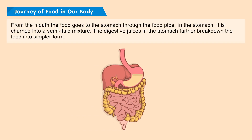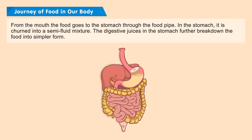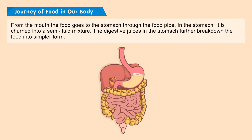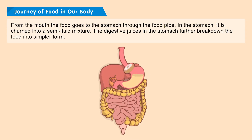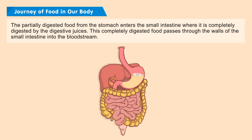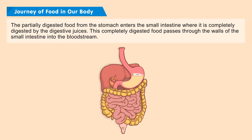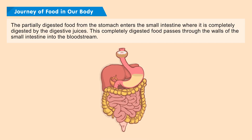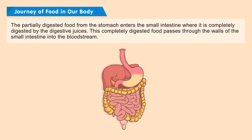From the mouth, the food goes to the stomach through the food pipe. In the stomach, it is churned into a semi-fluid mixture. The digestive juices in the stomach further break down the food into simpler form. The partially digested food from the stomach enters the small intestine, where it is completely digested by the digestive juices.